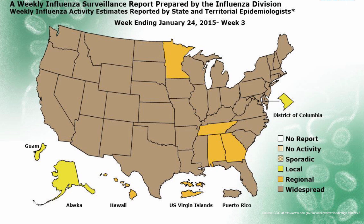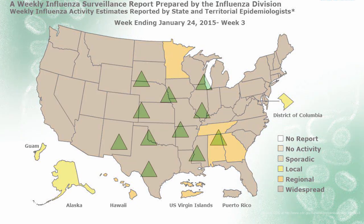Let's use influenza, or the common flu, to explain the differences. In this example, we have a population of individuals, each represented by a green triangle. The population can be very large, such as an entire country, or relatively small, such as a group of villages.